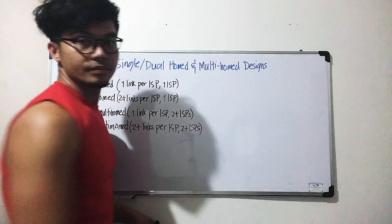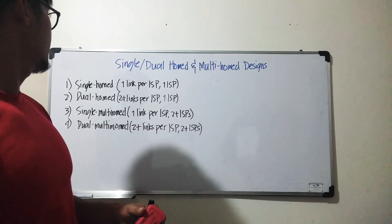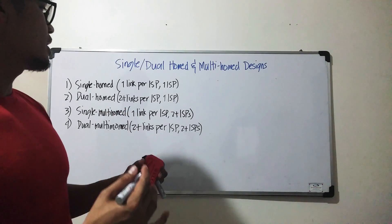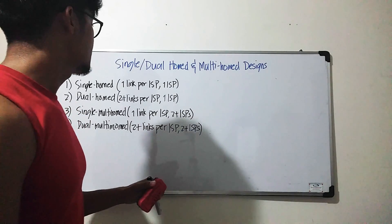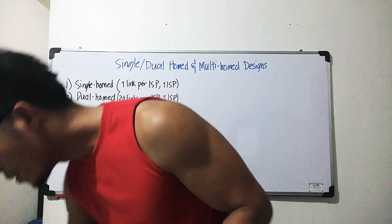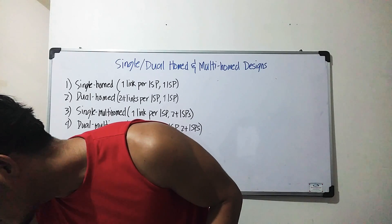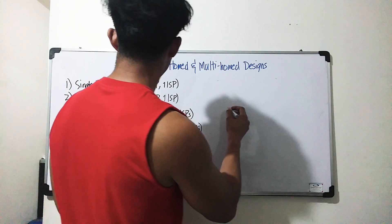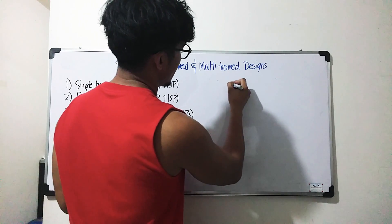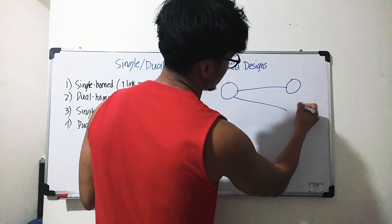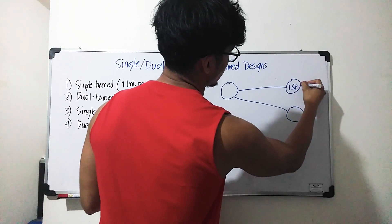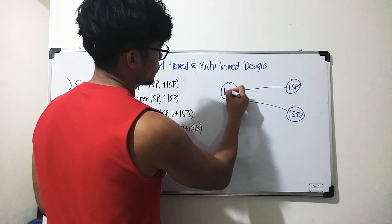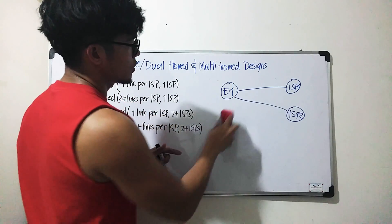Number three is single multi-homed design — basically a single link connected to two or more ISPs. So one link connected to two or more ISPs. Here's an example: this is ISP one and this is ISP two.